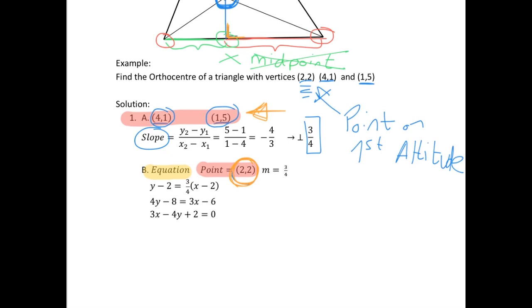So then, we have our slope is 3/4, we have a point on our line, so filling in to the formula y - y₁ = m(x - x₁). Expanding our brackets and simplifying down, we have an equation, 3x - 4y + 2 = 0. And that's the equation of one of our altitudes.